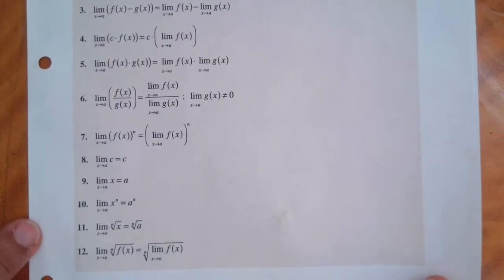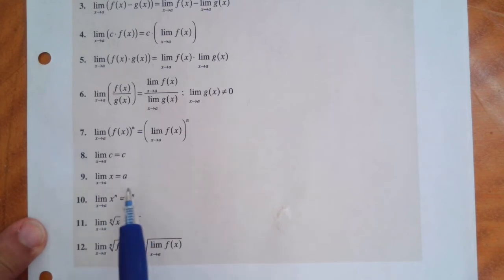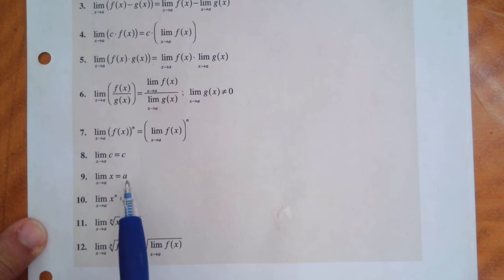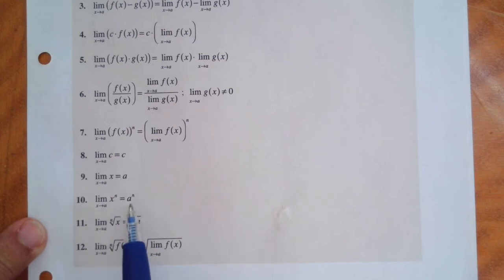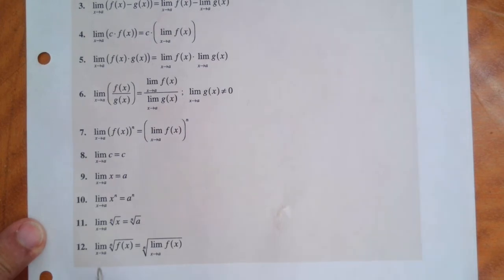The bottom rules are more about direct substitution — you're plugging in the value of a into the function and working it out: a to the n, and so on. Most of these are just telling you to do direct substitution. The last one is a root function: take the limit of the function first, then take the root.